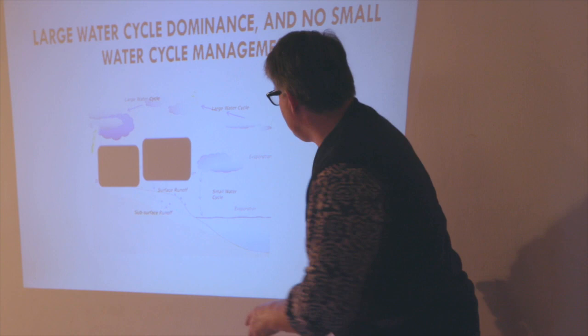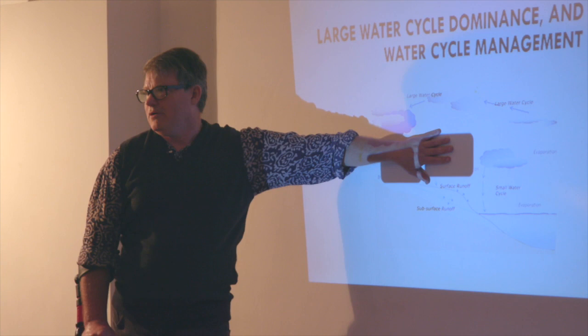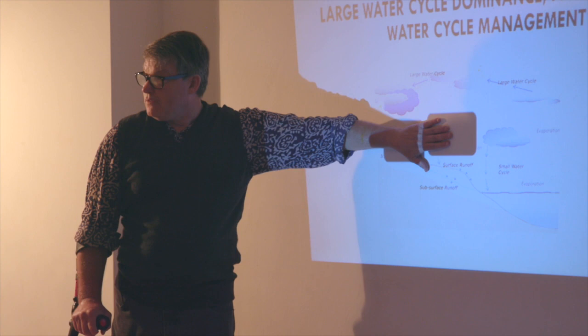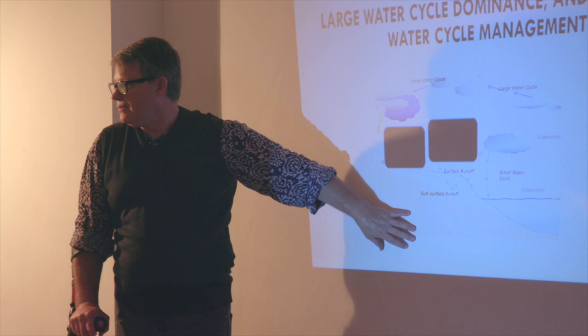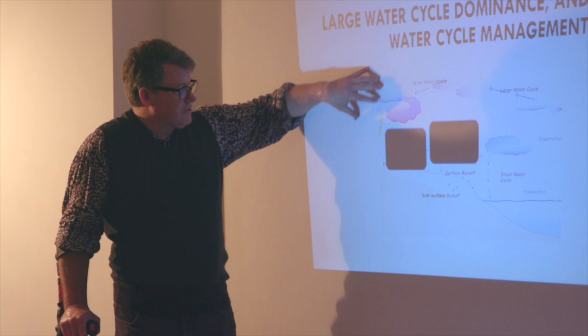If we take away the heifer, we take away the boss - the small water cycle - all we have is a large water cycle. And when we have the large water cycle, we have these massive rain events like we have been having.